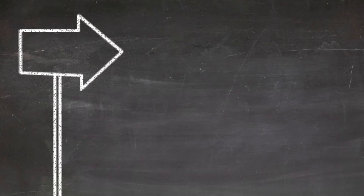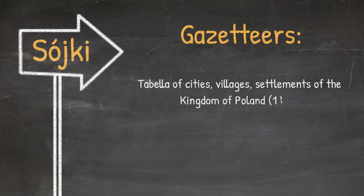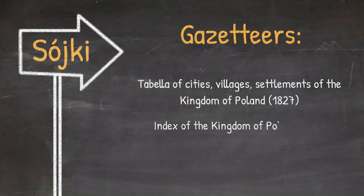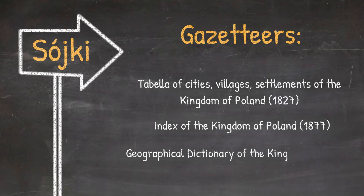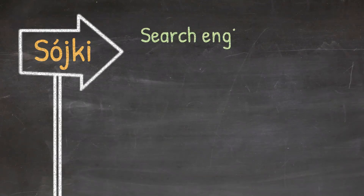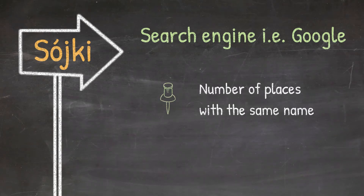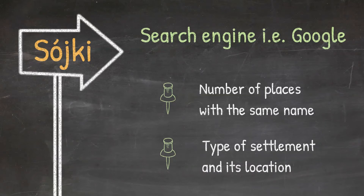There are many ways to start researching Suiki. Some will go directly to gazetteers like the Tabela of Cities, Villages, and Settlements of the Kingdom of Poland 1827, the Index of the Kingdom of Poland 1877, the Geographical Dictionary of the Kingdom of Poland, Karton Maester, etc. But we usually like to use Google first. A Google search will show how many places in Poland may have the same name, and give us an idea of whether these places were a village, city, or other type of settlement. If it was a village, chances are the registration location will be in another place.